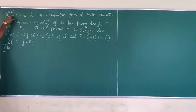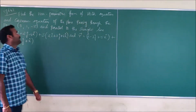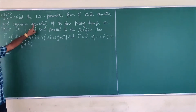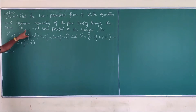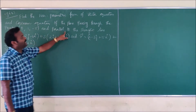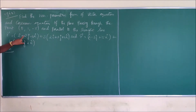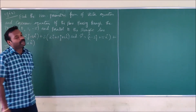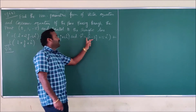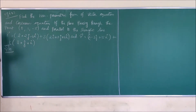Example 6.43: Find a non-parametric form of vector equation and a Cartesian equation of the plane passing through the point (0, 1, -5) and parallel to the lines r-vector = i-cap + 2j-cap - 4k-cap + s(2i-cap + 3j-cap + 6k-cap) and r-vector = i-cap - 3j-cap + yk-cap + t(i-cap + j-cap + k-cap).